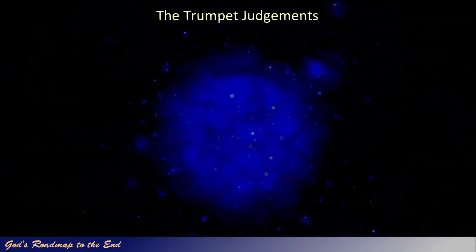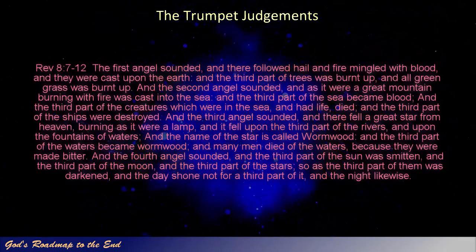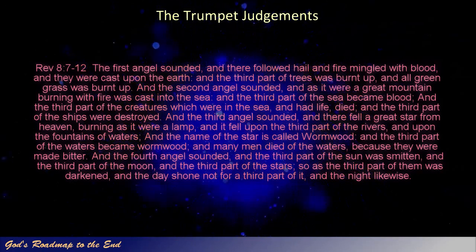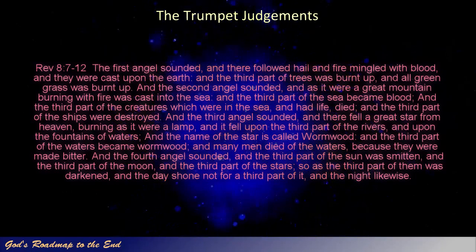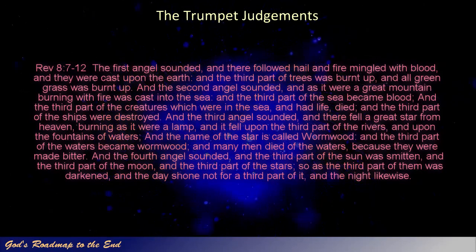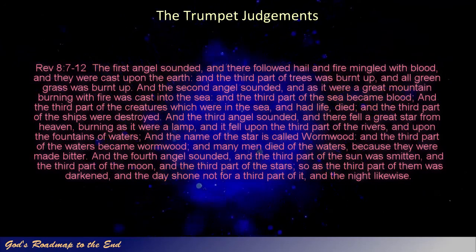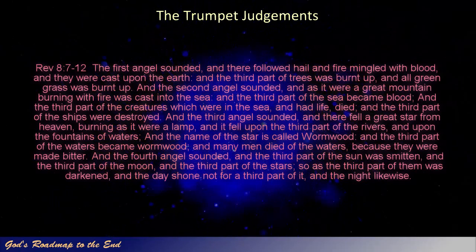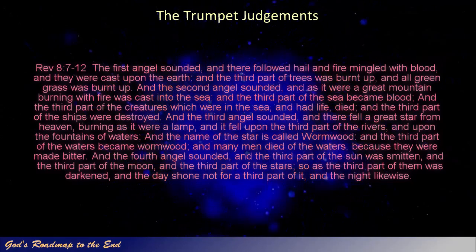Revelation 8 verses 7 to 12: 'The first angel sounded, and there followed hail and fire mingled with blood, and they were cast upon the earth, and the third part of trees was burnt up, and all green grass was burnt up. And the second angel sounded, and as it were a great mountain burning with fire was cast into the sea, and the third part of the sea became blood, and the third part of the creatures which were in the sea and had life died, and the third part of the ships were destroyed. And the third angel sounded, and there fell a great star from heaven, burning as it were a lamp, and it fell upon the third part of the rivers and upon the fountains of waters; and the name of the star is called Wormwood, and the third part of the waters became Wormwood, and many men died of the waters because they were made bitter. And the fourth angel sounded, and the third part of the sun was smitten, and the third part of the moon, and the third part of the stars, so as the third part of them was darkened, and the day shone not for a third part of it, and the night likewise.'